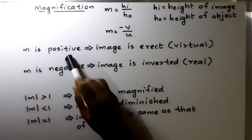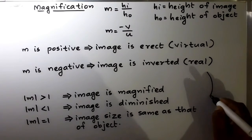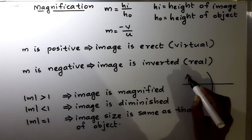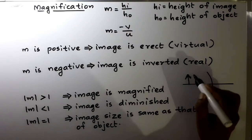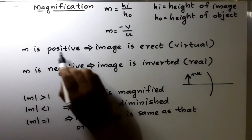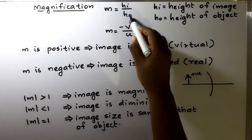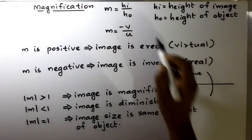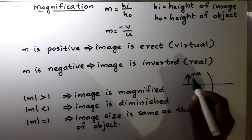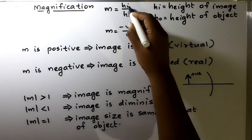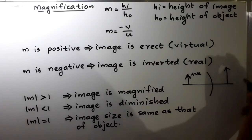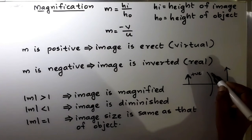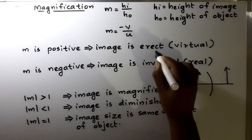When M is positive, Hi by Ho is positive, meaning Hi and Ho are both of the same sign — both positive. Since object height is always positive, Hi is also positive, meaning the image is erect. An erect image from a spherical mirror means it is virtual.